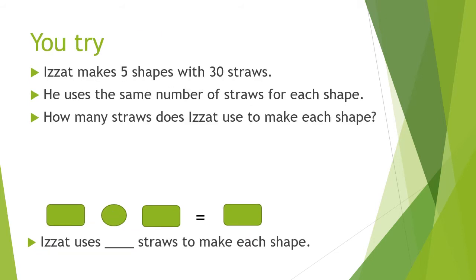So next one. This time you will try. Teacher will help you a little bit in the beginning. Izzat makes 5 shapes with 30 straws. He uses the same number of straws for each shape. How many straws does Izzat use to make each shape? First, you need to choose the smaller number. So between 5 and 30, which one is smaller? And then you draw the same number of boxes. Can you try first? Do all the steps.